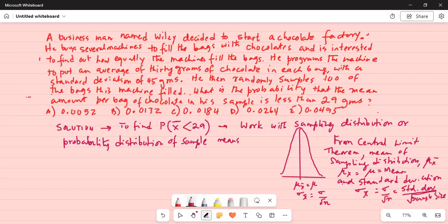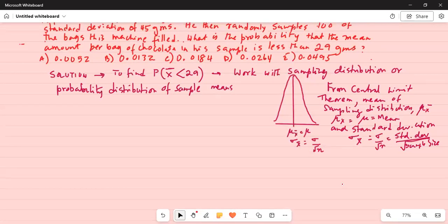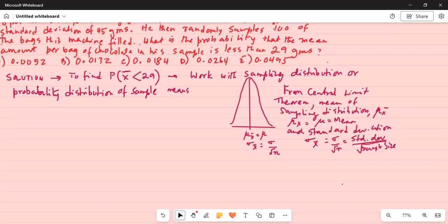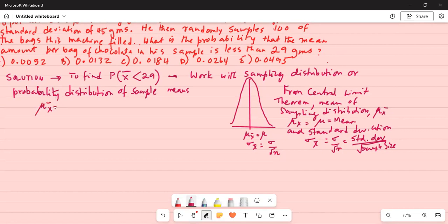So with this background let's work on this problem. My μ x̄ is equal to μ is equal to 30. My σ is given as 45. My sample size n is 100. So σ x̄ which is the standard deviation of the sampling distribution is σ divided by square root of n which is 45 divided by square root of 100 which is 45 divided by 10 or 4.5.